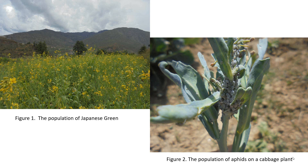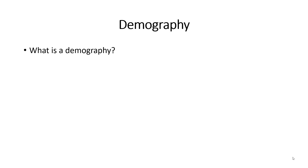Similarly, Figure 2 shows the population of aphids on a cabbage plant. Here, the resources they share is the surface of the plant for space and its sap for nutrition. The aphids will go through intraspecific competition.